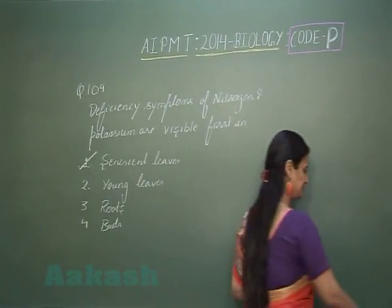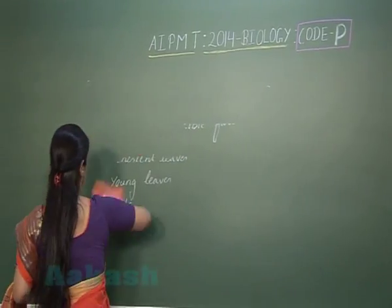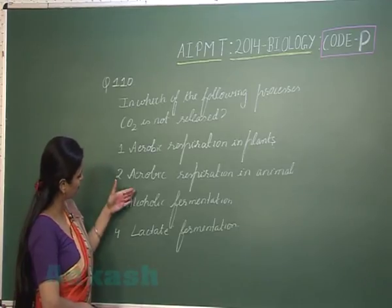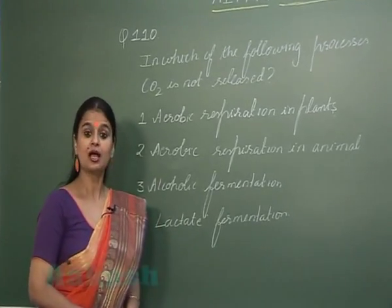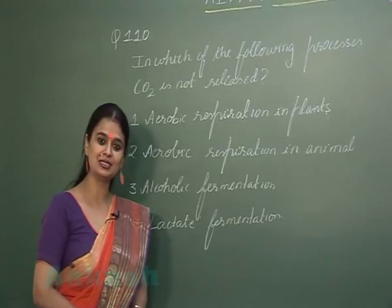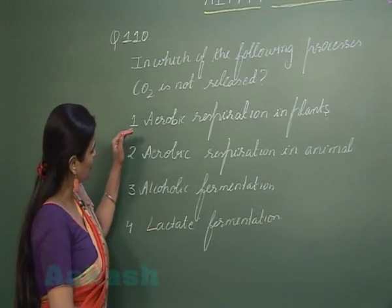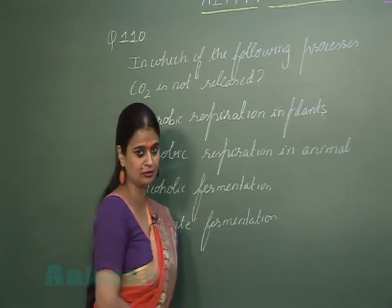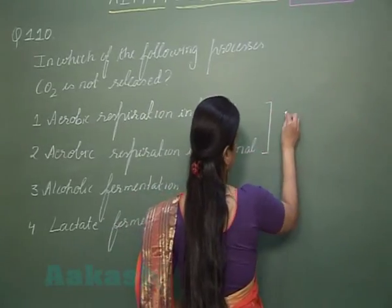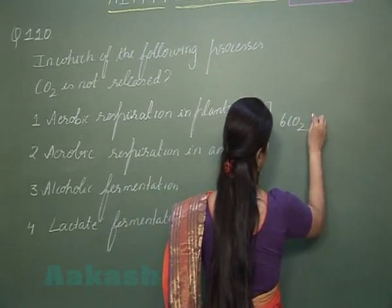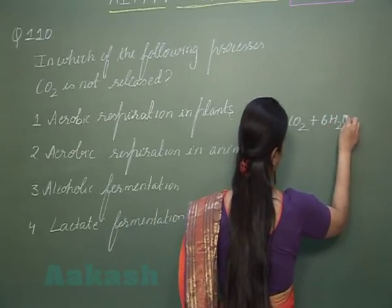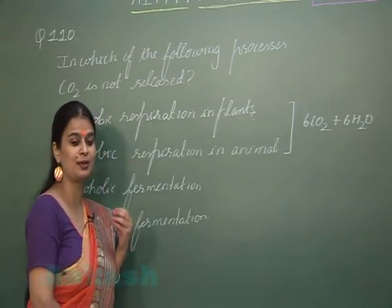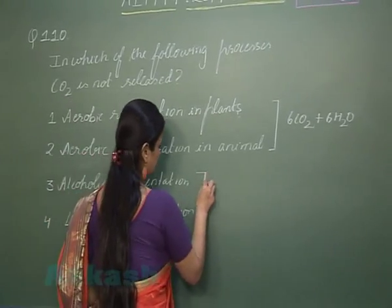Now question number 110: in which of the following respiratory processes is carbon dioxide not released as a by-product? In aerobic respiration in plants as well as animals, there is complete breakdown of glucose resulting in the formation of carbon dioxide and water.